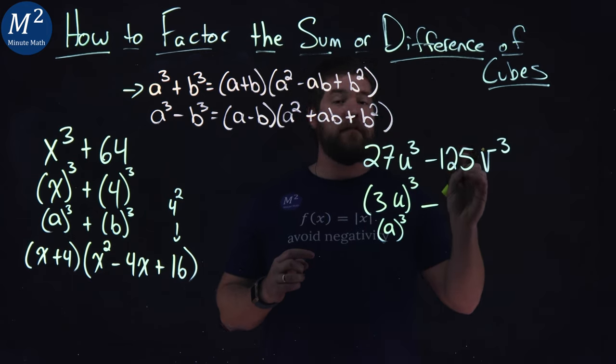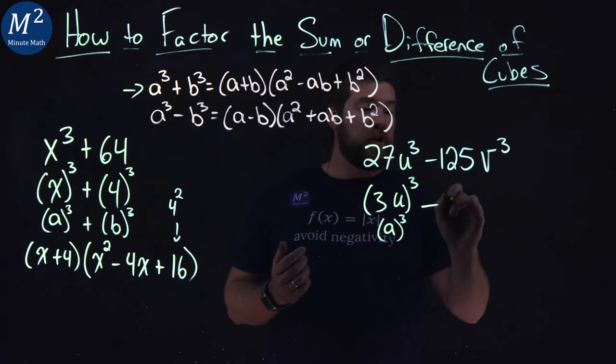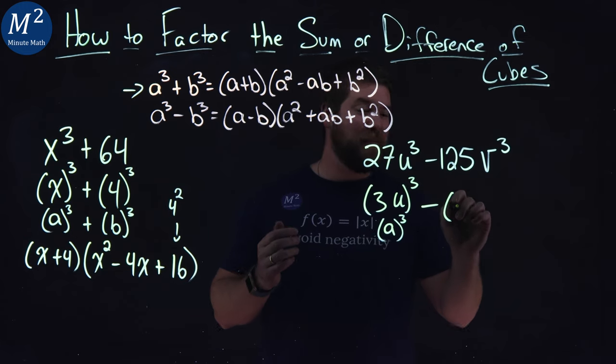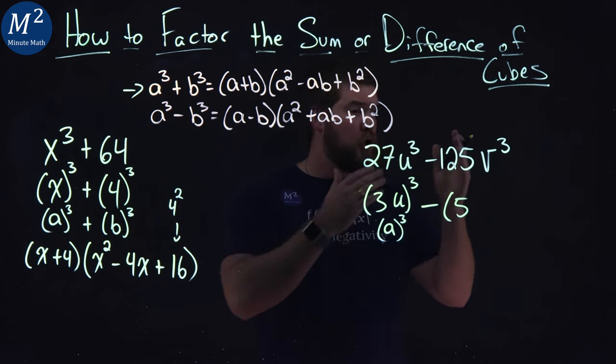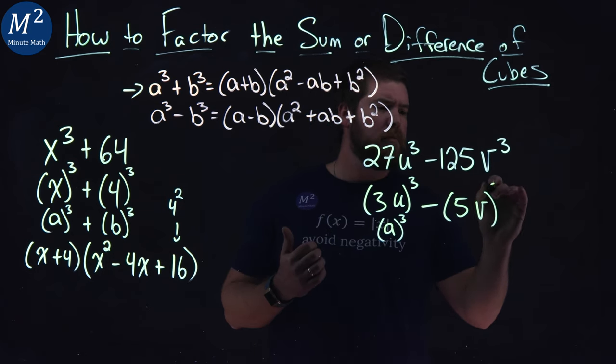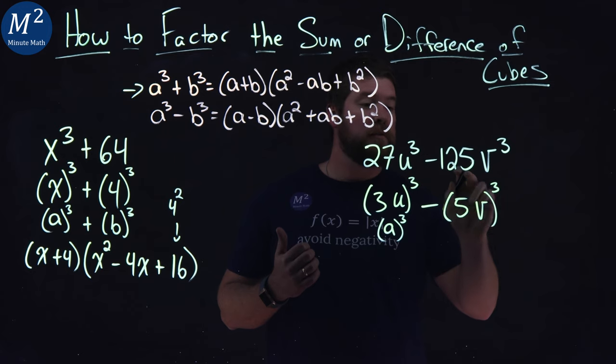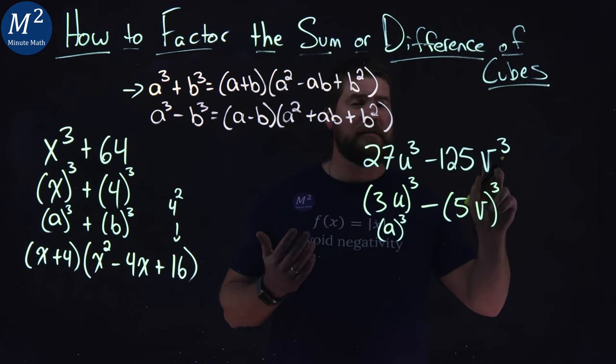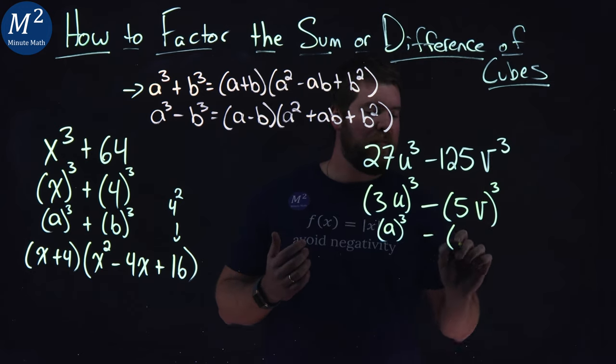We have 125v cubed. What's a cube root of 125? That's going to be a 5. Cube root of v is a v right there. And we write it as all cubed. 5 cubed is 125 and v cubed is v cubed. And so we have it in our form.